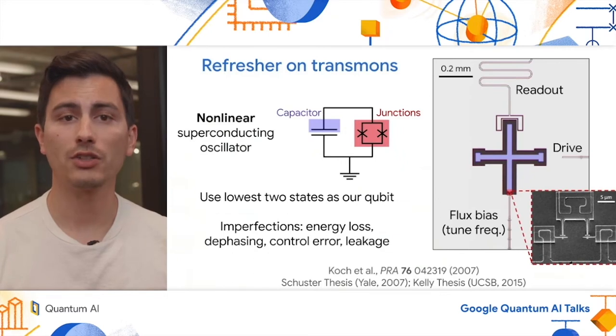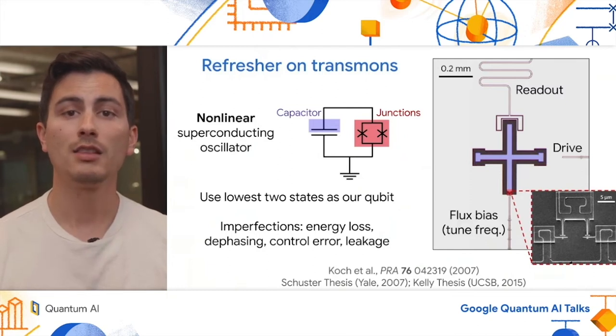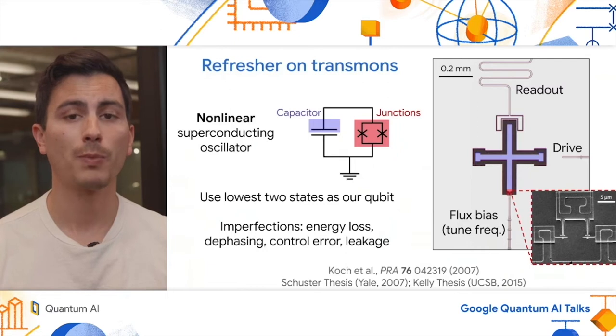So what does a transmon actually look like in practice? On the right hand side of the screen, you'll see an optical image of a transmon qubit. The blue cross actually forms the top paddle of a capacitor, and at the very bottom of our capacitor, you'll see in the inset our DC squid. In addition, you'll notice three other components, which are crucial to our circuit. At the bottom, you'll notice that there's a flux bias line. This allows us to tune the frequency of our qubits as we wish. On the right hand side, there's a drive line, which allows us to deliver microwaves to the qubit to perform single qubit operations. And finally, at the top, you'll see our resonator, which we use for reading out the qubit states.